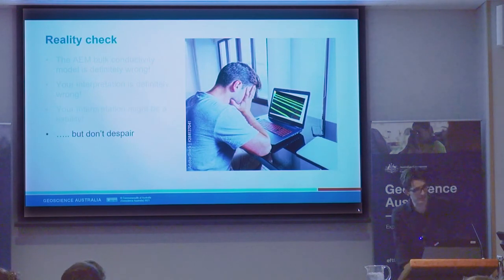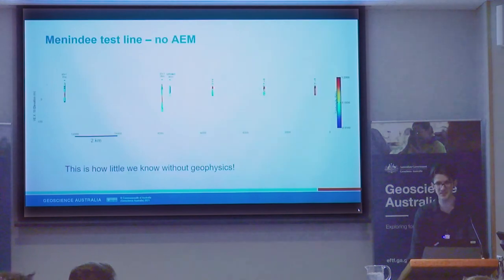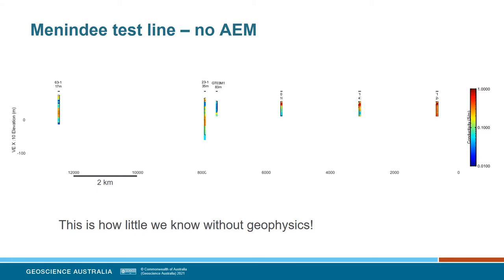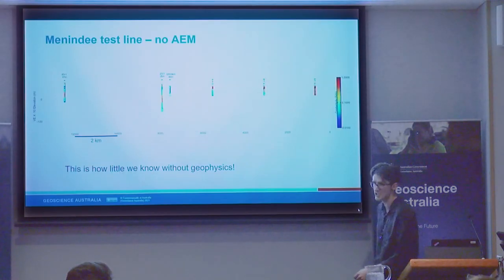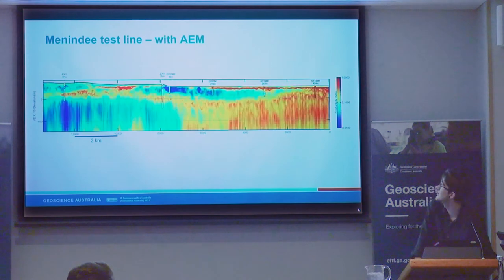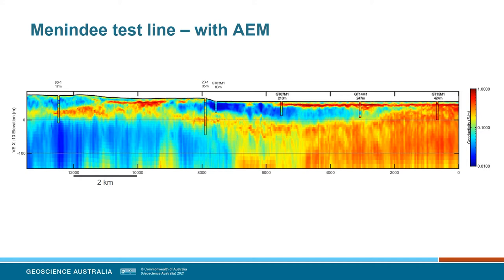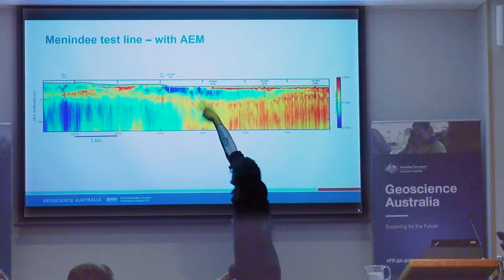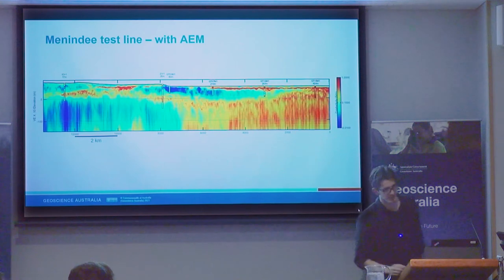But I'm not generally a negative person, so don't despair. This is the Menindy test line with no AEM, just conductivity logs — you might be able to do some sort of interpolation, but it's all very vague and uncertain. But you put the AEM over the top and you suddenly have quite a good understanding of what's down there. We can't trust everything and we don't know necessarily what the rocks down there are doing, but we have a good idea of the broad structure.